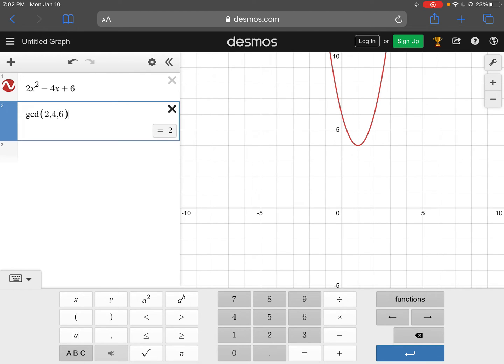You'll notice down here we have that x equals 2 in the bottom right hand corner. That's telling us that our GCF of 2, 4, and 6 is 2.